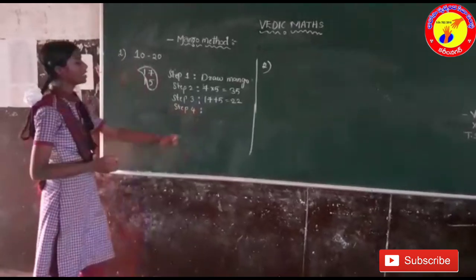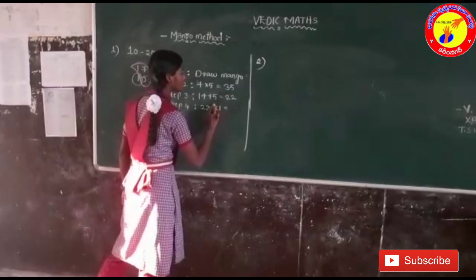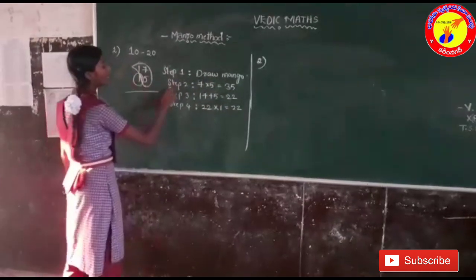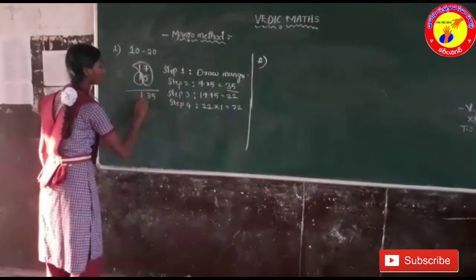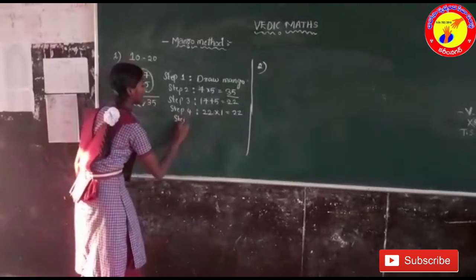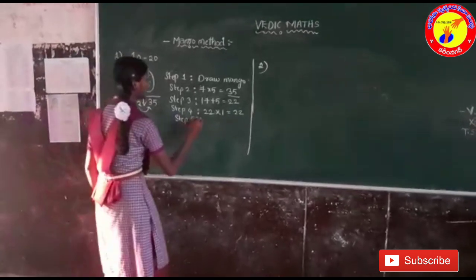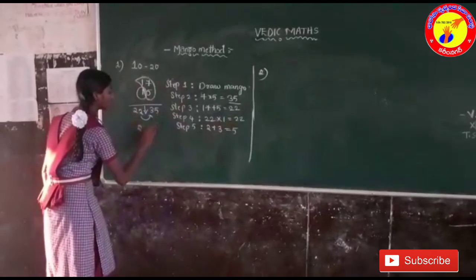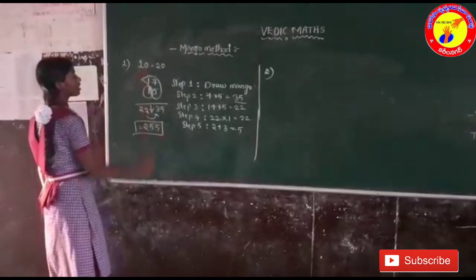In step 4, we have to multiply 22 with the number in the last ones place. 22 into 1 is equal to 22. In step 5, we have to add these middle numbers and write the first number and the last number as they are. That is 2 plus 3 is equal to 5. So the answer is 255 for this multiplication, which is 17 into 15.